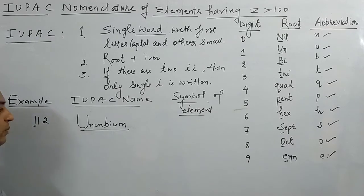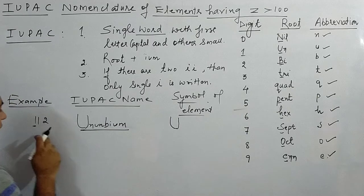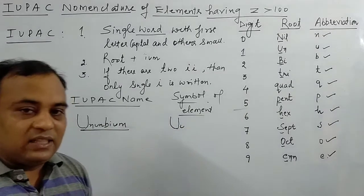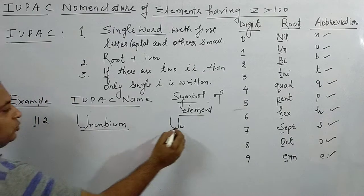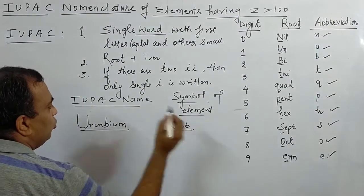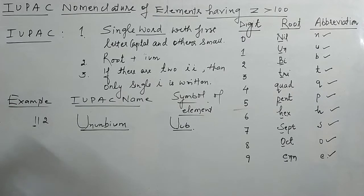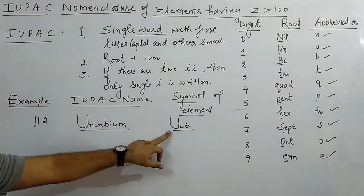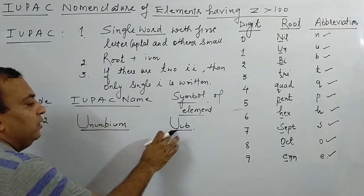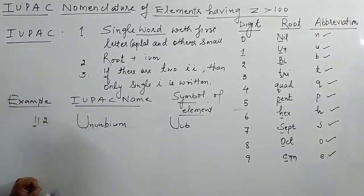As for the symbol of element 112: take the first letter of each root — un → U (capital), un → u (small), bi → b (small). So the symbol is Uub. In general, the first letter of the symbol is capital and the rest are small — so symbol is Uub, IUPAC name is Ununbium.